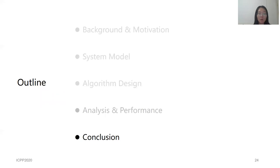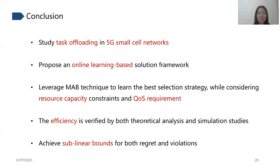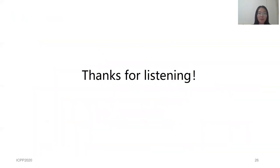Finally, let's summarize conclusions. We studied task offloading in 5G small cell networks and proposed an online learning based solution framework. We leveraged the MAB technique to learn the best selection strategy while considering network resource capacity and QoS requirements. We proved that our algorithm achieves sublinear bounds for both regret and violations. The efficiency of our algorithm is verified by both theoretical analysis and simulation studies. My presentation is over. Thank you for listening.